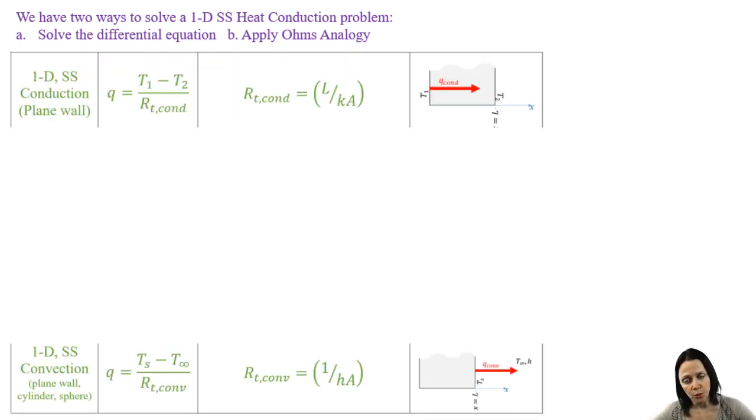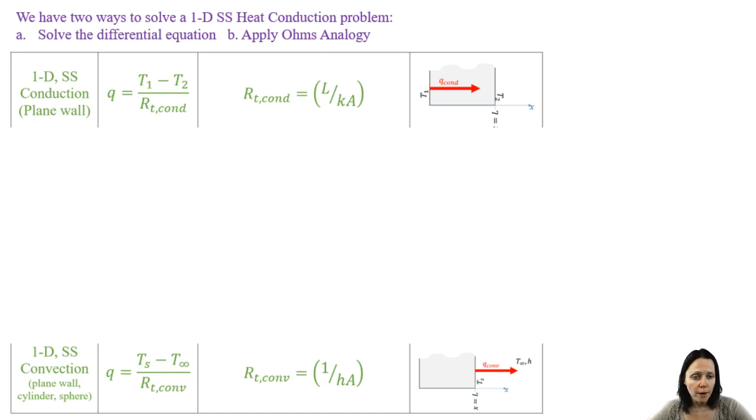So from video 3.1, we derived the expression for the thermal resistance in a plane wall and the thermal resistance for convection. And that thermal resistance to convection, it's the same for a plane wall, a cylinder, or a sphere. But what about a cylindrical pipe like the one we had in this problem?